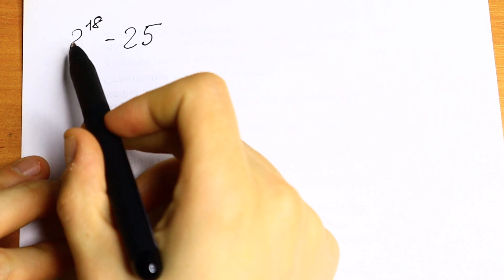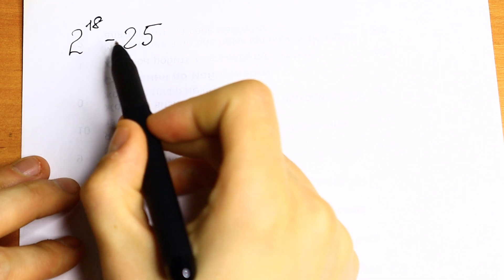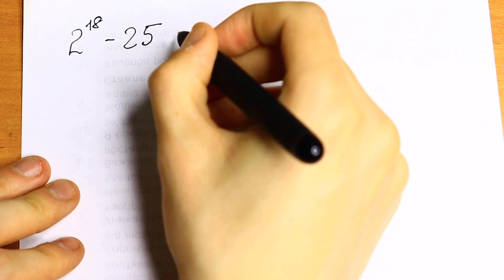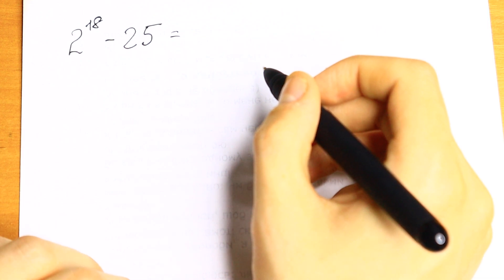Hello everyone, welcome back to Mathmoo. Today we have an interesting algebra problem. We have 2 to the 18th power minus 25 and we need to subtract this and we need to find our answer.